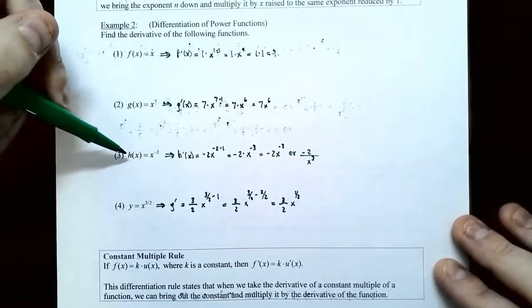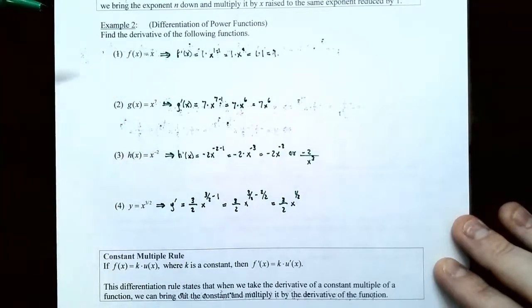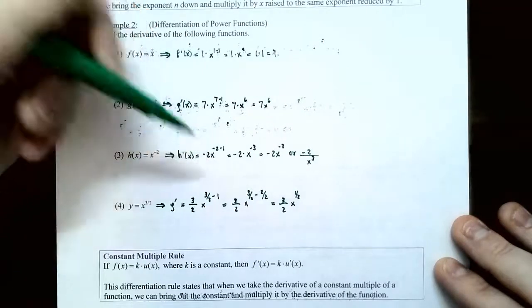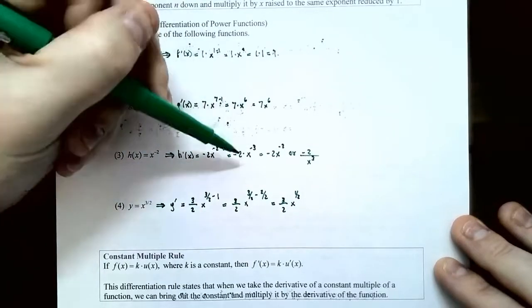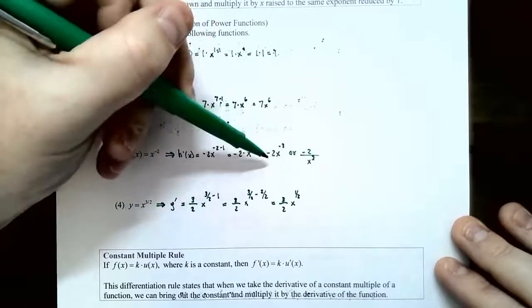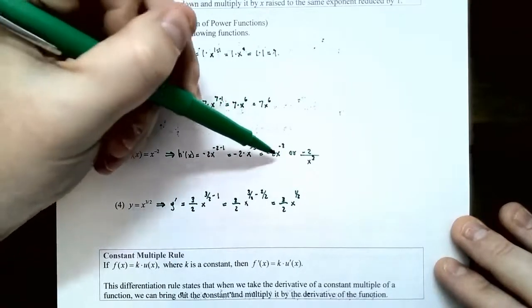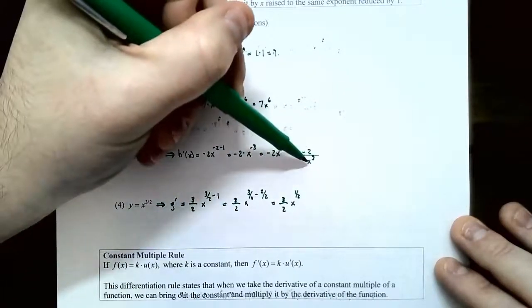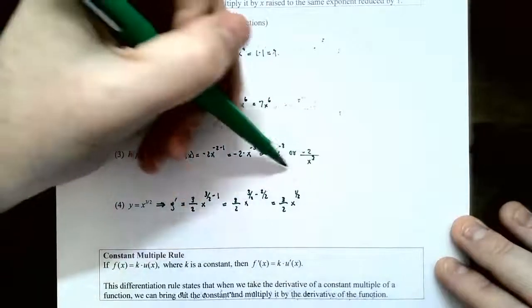Number three, h of x equals x to the negative 2. This is a power function with exponent negative 2. Using the power rule, h prime of x equals negative 2 times x to the negative 2 minus 1, which gives negative 2x to the negative 3. This answer is perfectly fine, but if you want to rewrite this so all the exponents are positive, you can keep the negative 2 in the numerator and bring x to the denominator, rewriting it as negative 2 divided by x cubed. Either one of these is perfectly fine.